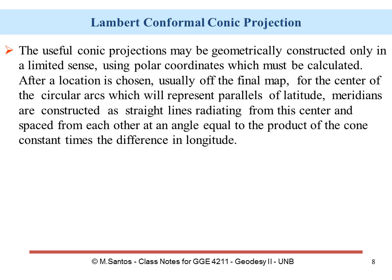Conic projections can generally be built using polar coordinates, which must be calculated after a location is chosen, usually off the final map — that location being essentially the pole. Circular arcs represent the parallels of latitude, and meridians of longitude are represented as straight lines radiating from the center, spaced from each other at an angle equal to the product of the cone constant times the difference in longitude.